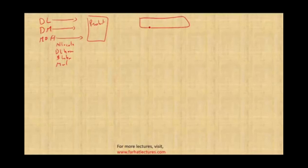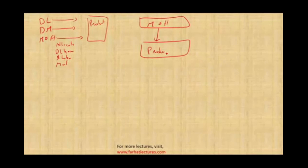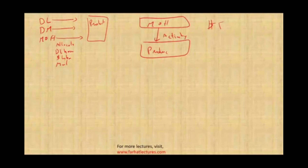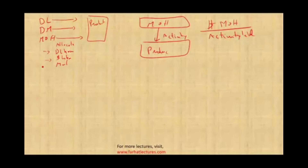What we did was compute a predetermined overhead rate. We take our estimated dollar amount of manufacturing overhead and divide it by the activity level. The activity level could be direct labor hours, dollar amount of labor, or machine hours.